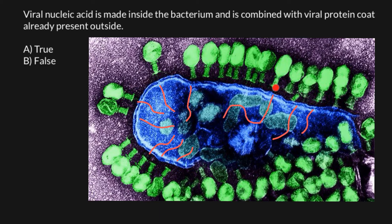Why do bacteriophages usually not penetrate bacteria? Because bacteria have a cell wall, unlike eukaryotic cells. Many prokaryotic cells have cell walls. So bacteriophages cannot penetrate inside the bacteria, but can instead eject their own DNA or RNA.